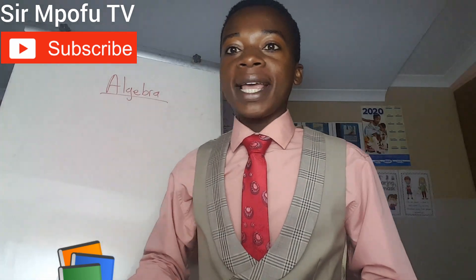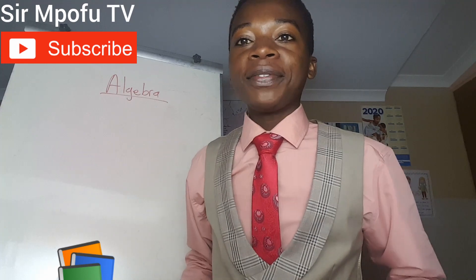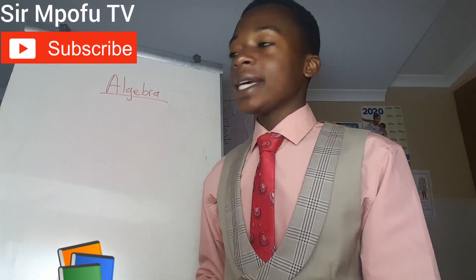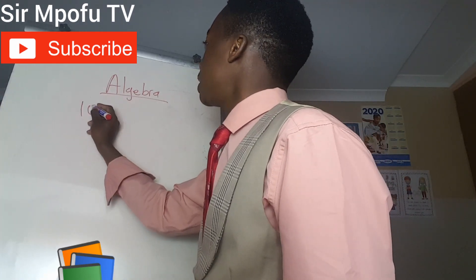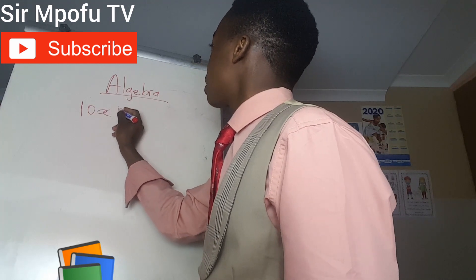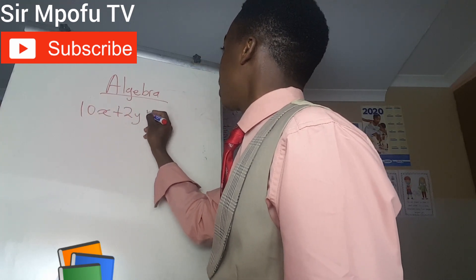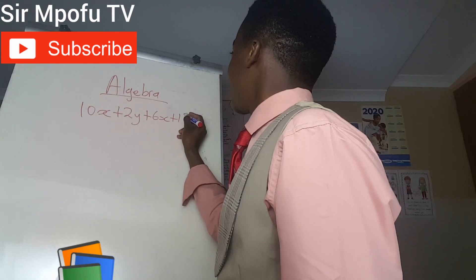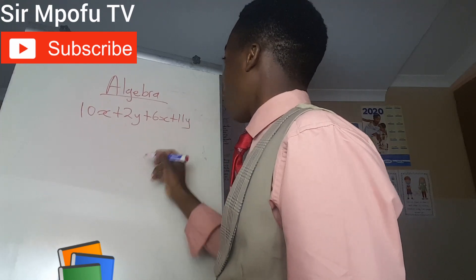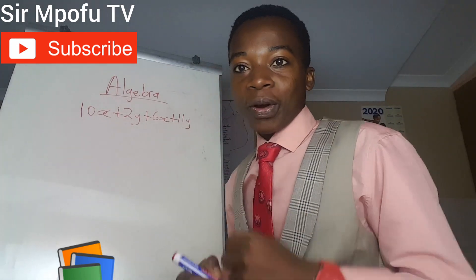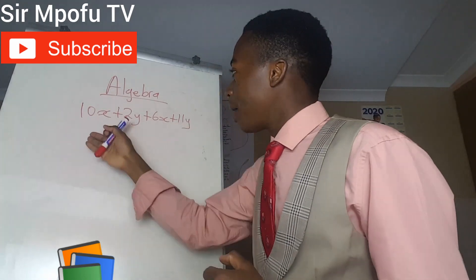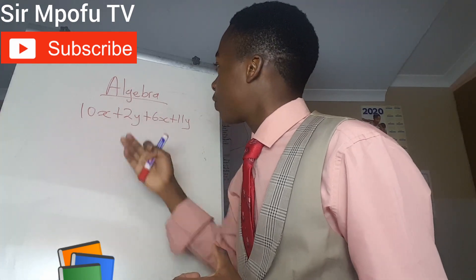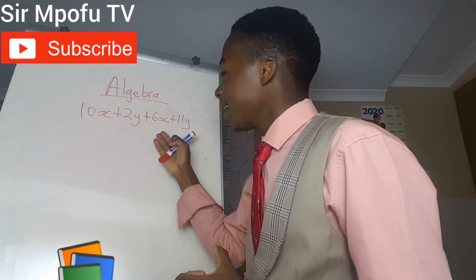What do I mean when I'm saying expression with different algebras? For example, let's say if you have 10x plus 2y plus 6x plus 11y. How do you solve this one? Why are we saying we have different algebras? Because if you check, you have x, y, x, y.